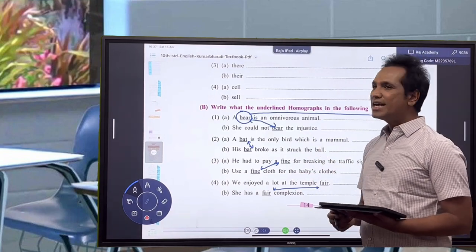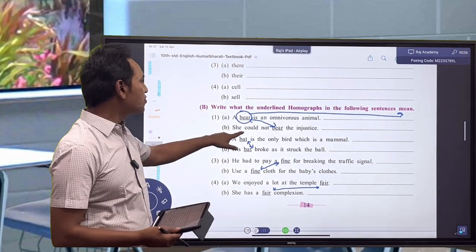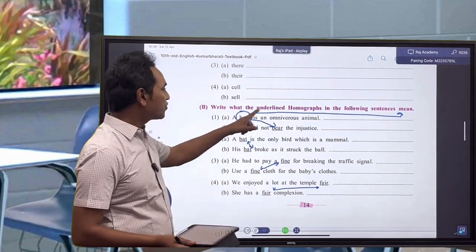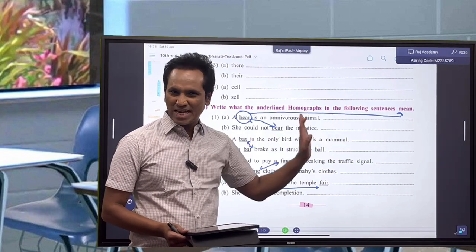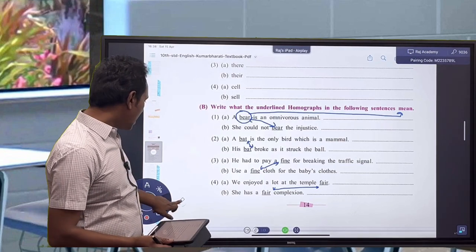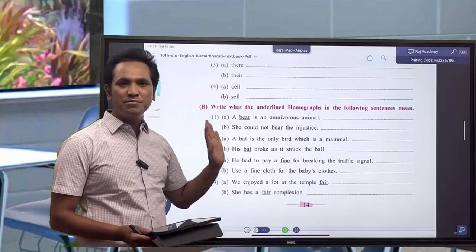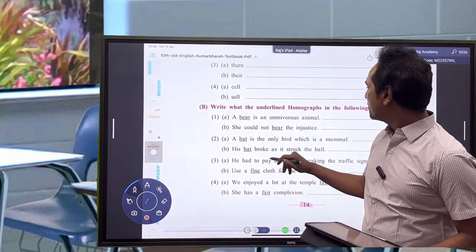A bear is an omnivorous animal, or she could not bear the injustice. So you have to write something here in the blank space. What is the meaning of the first bear and what is the meaning of the second bear? That is importantly to be pointed out.